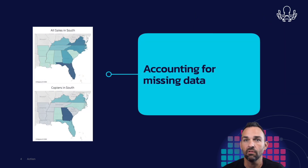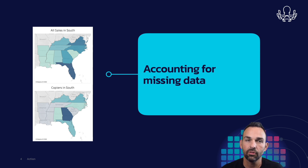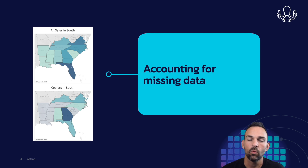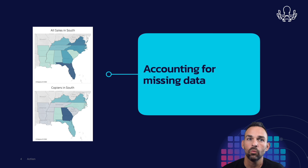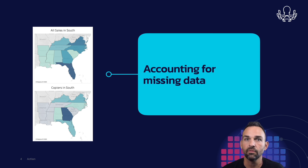Scaffolding also helps us account for missing data. Here we see all sales in the south on the top map and every state is represented. But if we look at copiers in the south, we see that there are some states that are missing. Again, scaffolding will help us with that issue.